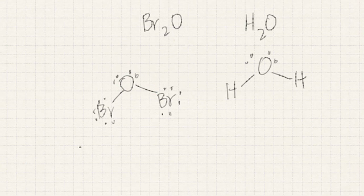So this is the correct structure for Br2O. We can check this by looking at the octet electrons.